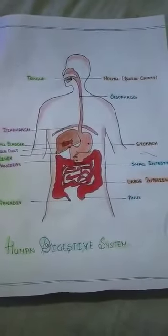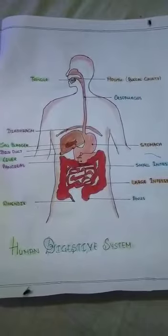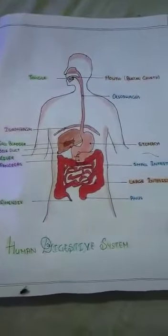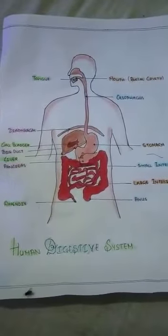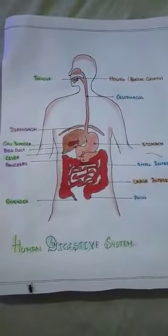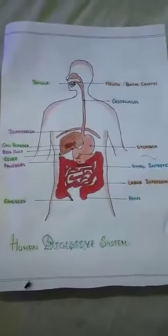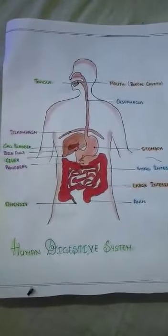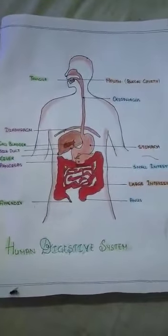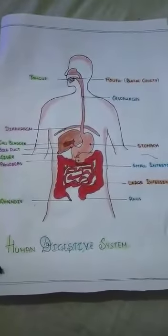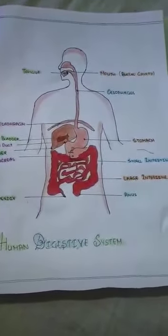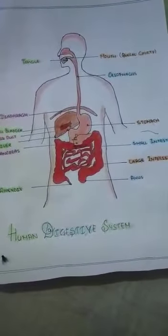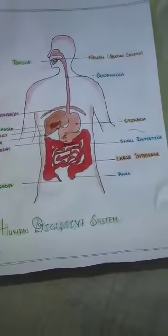Liver and pancreas are connected to the small intestine. The liver produces a substance called bile, which is stored in the gallbladder. Bile is alkaline in nature and contains salts which break fats into small droplets for enzymes to digest. Pancreatic juice enters from the pancreas into the small intestine and contains three enzymes: amylase, trypsin and lipase. Amylase breaks starches and carbohydrates, trypsin breaks proteins, and lipase breaks fats.